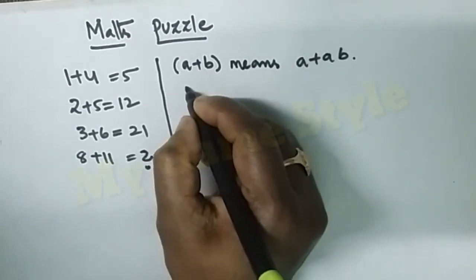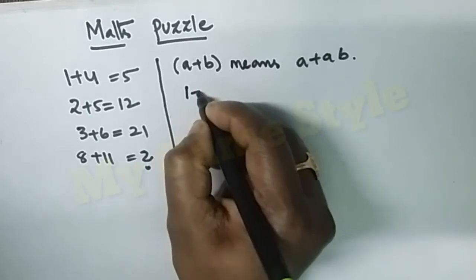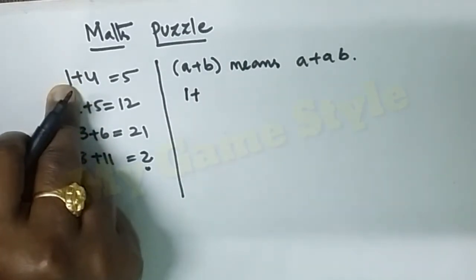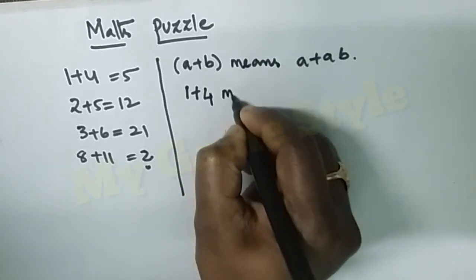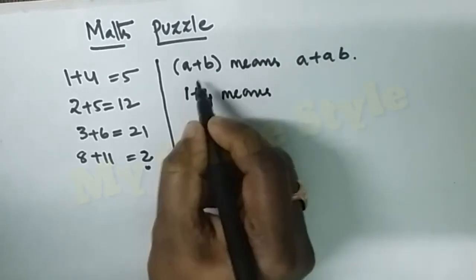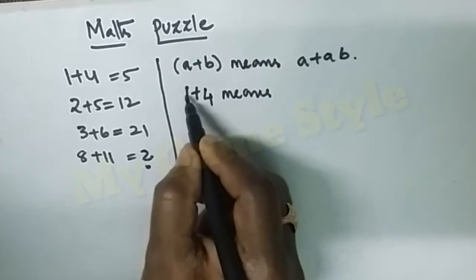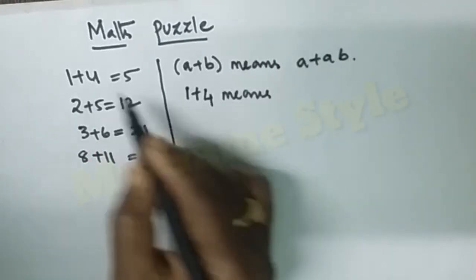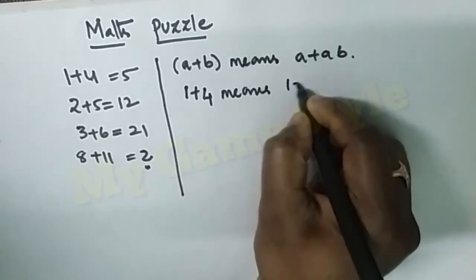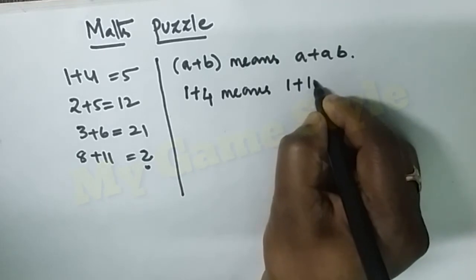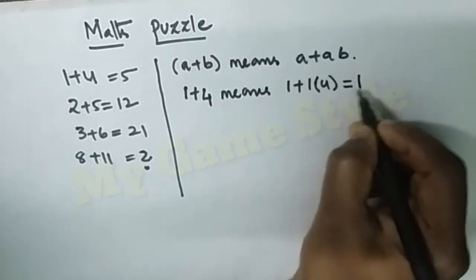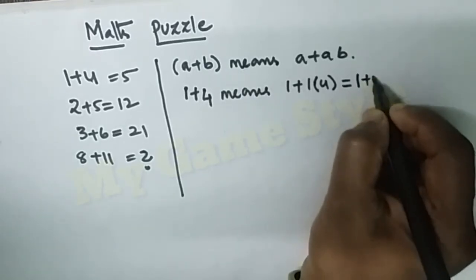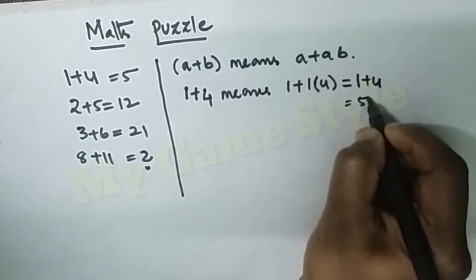So now, 1+4 means first a is 1 and b is 4. This means 1 plus 1×4, which is 1+4=5.